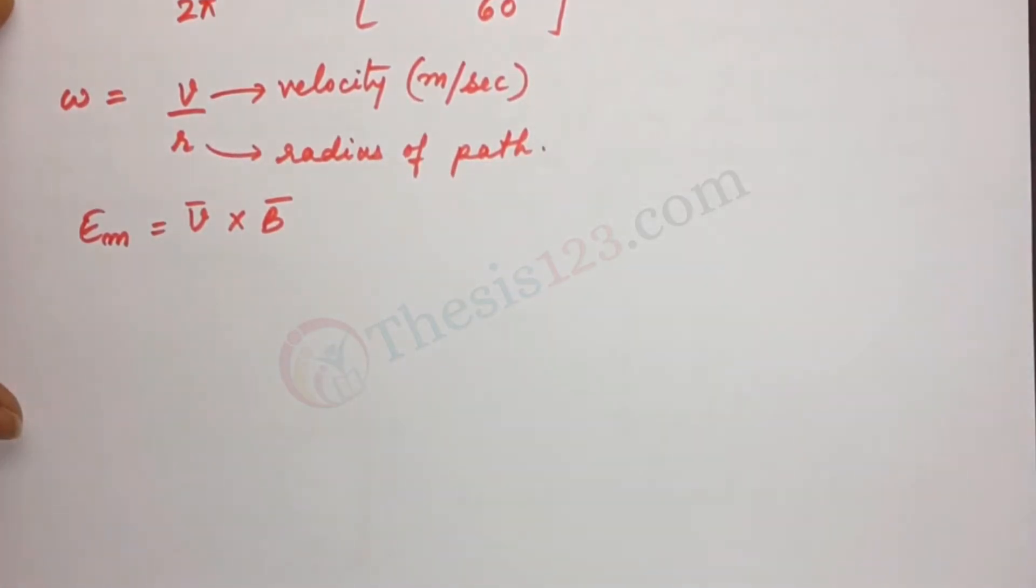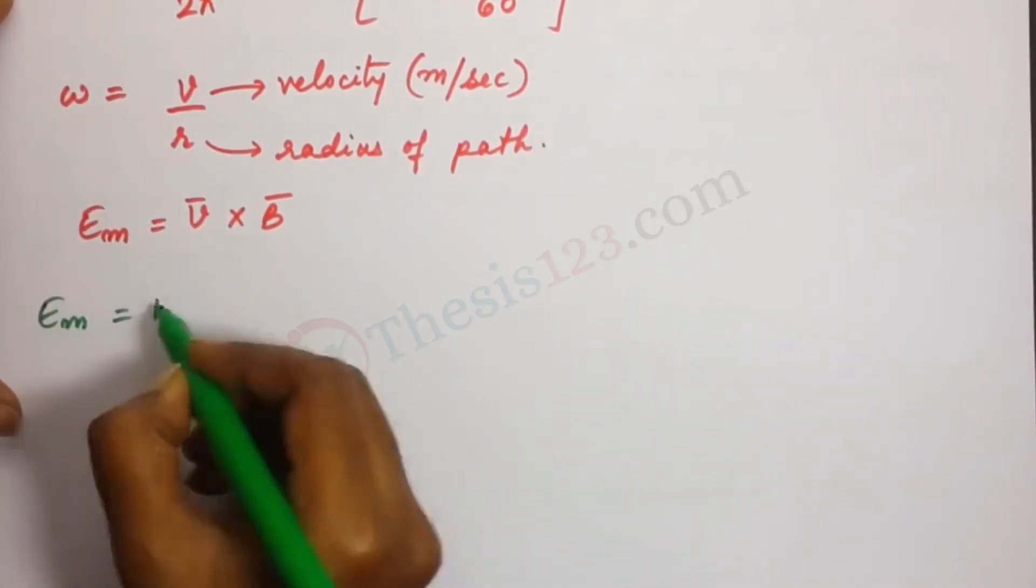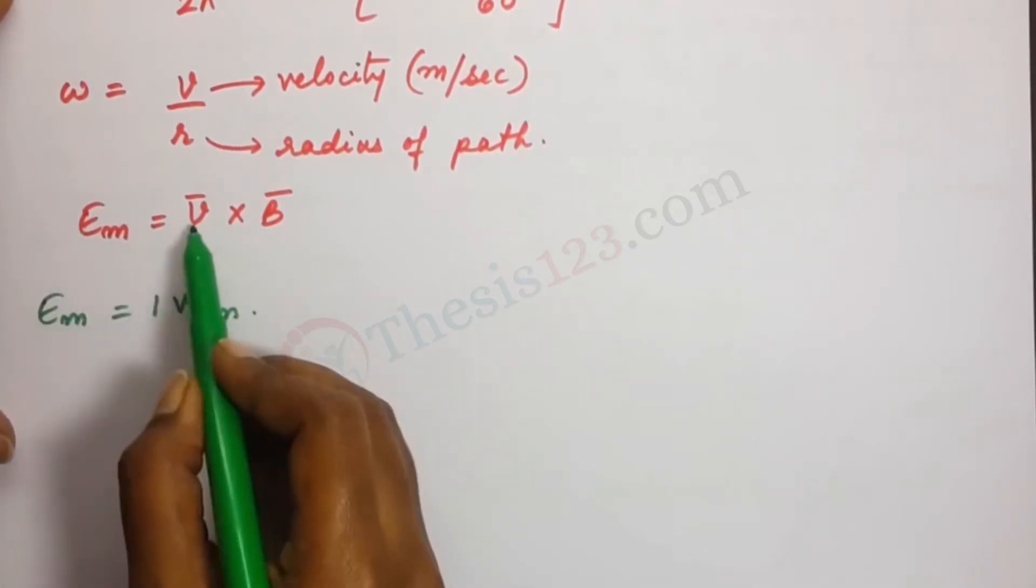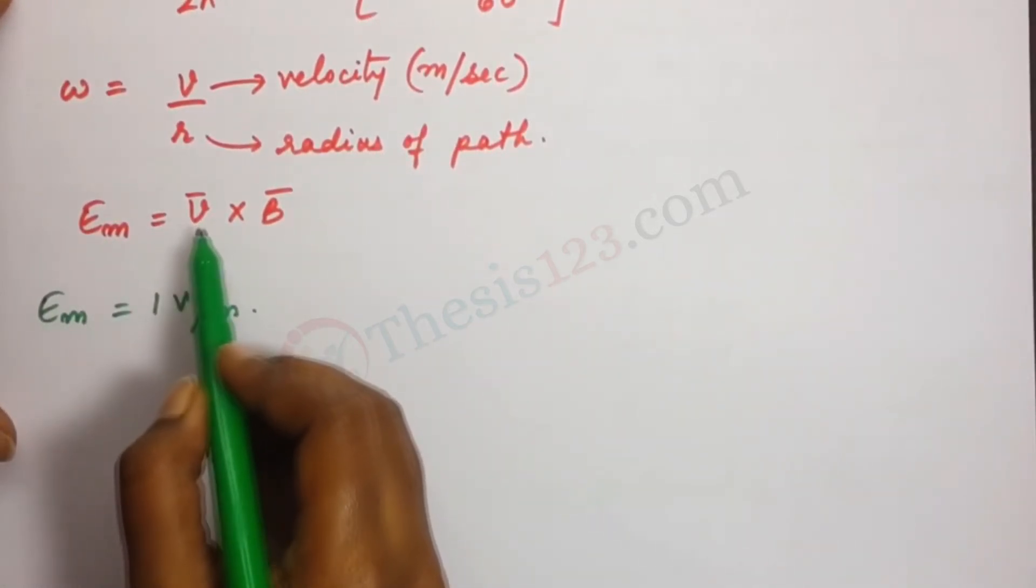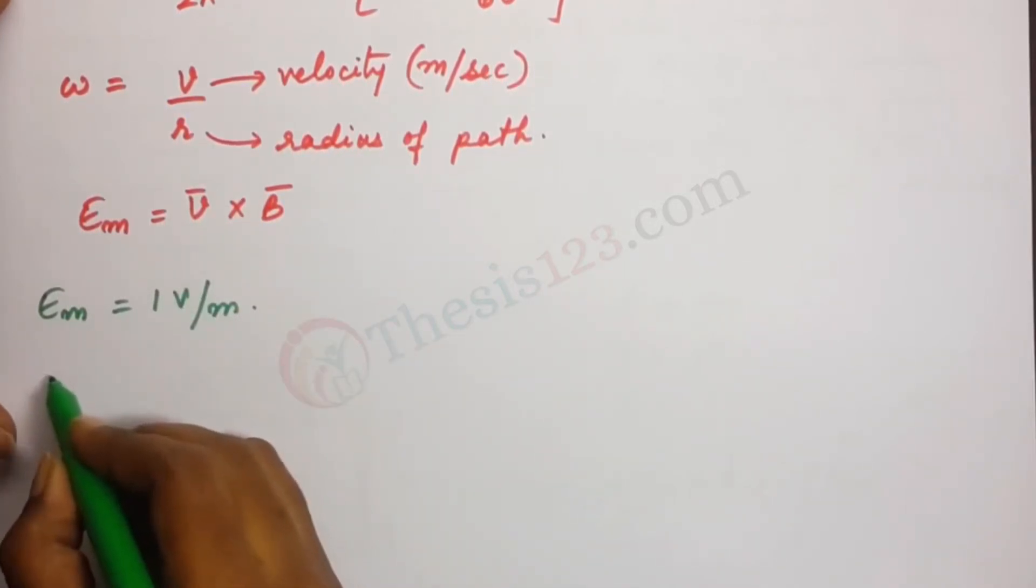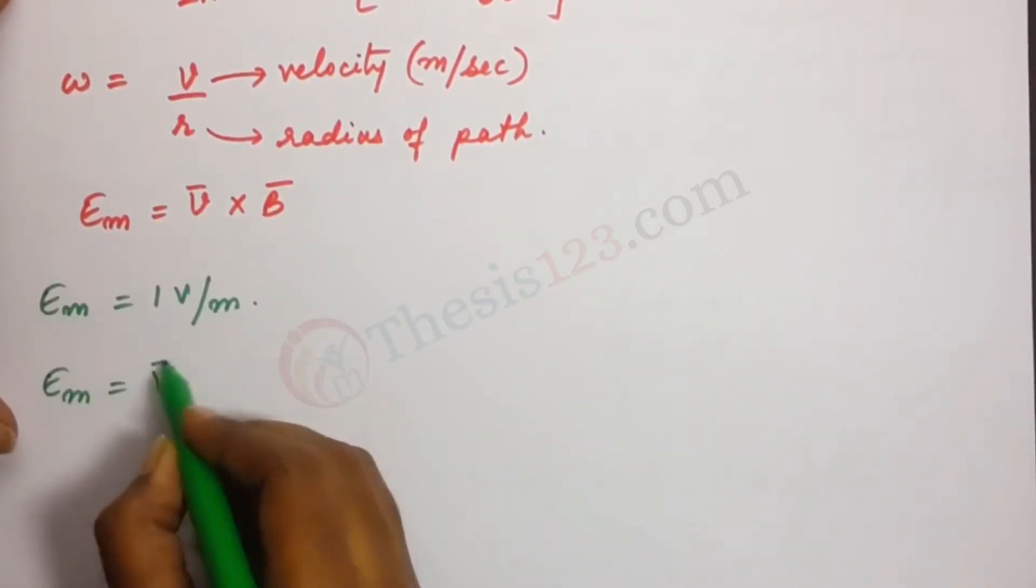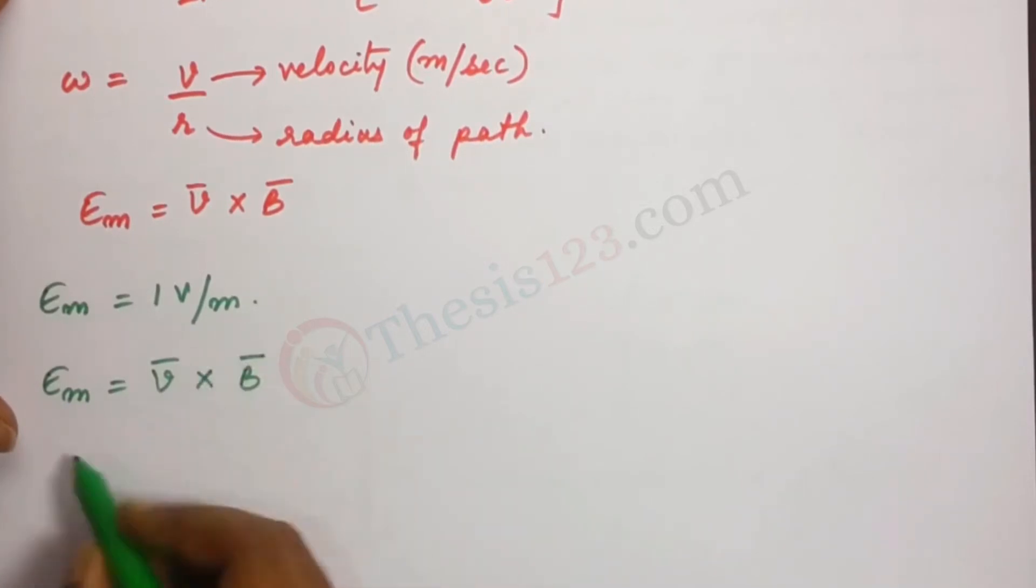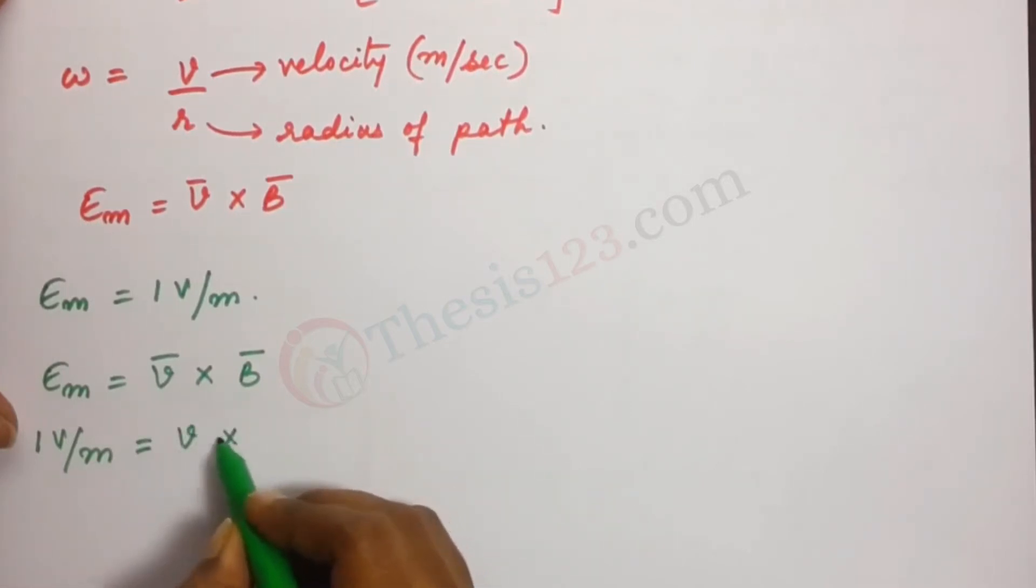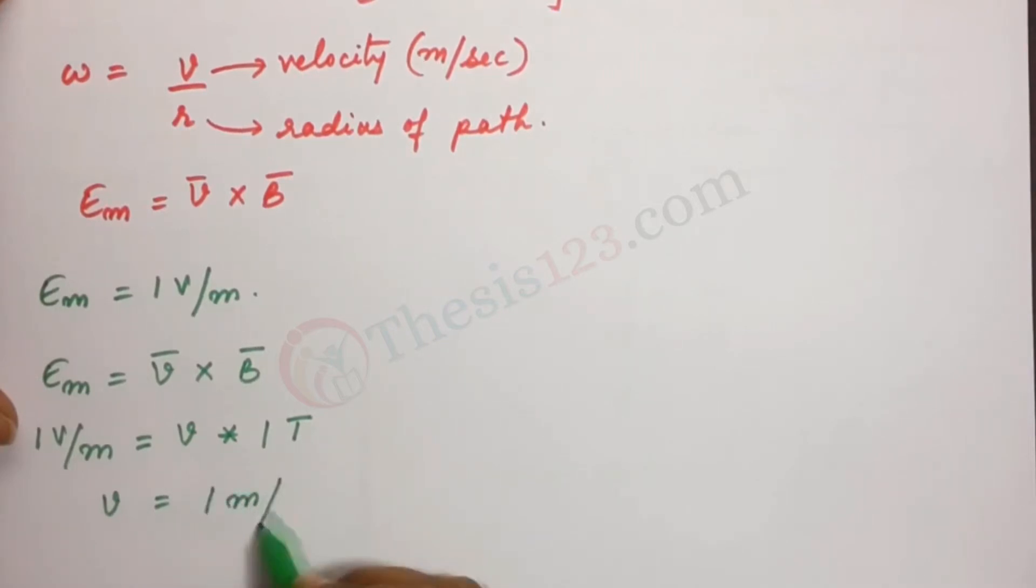E_m equals 1 volt per meter. Now using this expression we will get what V is. I'm going to use this now here. So E_m equals V bar into B bar. So 1 volt per meter equals V into 1 tesla. So V equals 1 meter per second.